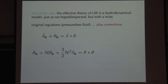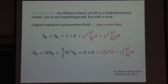Here is the final answer. The theory we started with has two equations — one for the density perturbation delta and one for the velocity theta — with interactions between them. After doing the effective field theory procedure, we get new equations with corrections: a new term in the equation for delta which is proportional to delta in Fourier space.